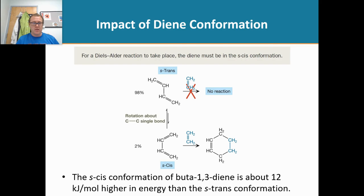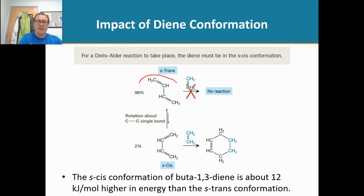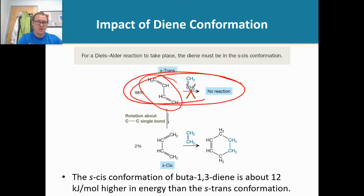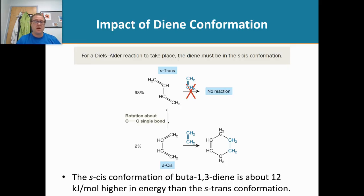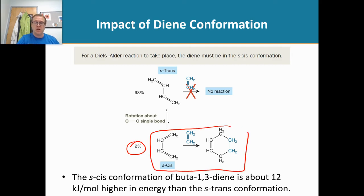Unfortunately, for the Diels-Alder reaction, when you have a diene, 98% of your diene is going to be in the S-trans conformation because it's the more stable conformation. But in the S-trans, we are not going to get a reaction to occur. So there's a small amount of our diene — 2% — that's going to be in the S-cis conformation, which is the correct conformation to do the Diels-Alder reaction.